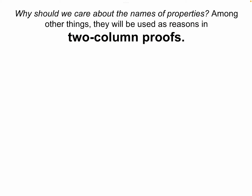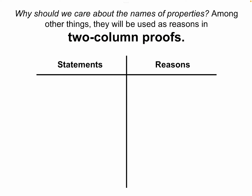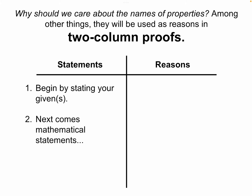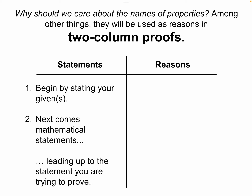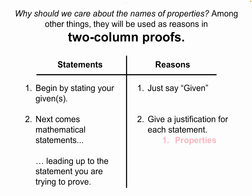Now, you also took notes on this page, so I'll go through it quickly. Why do we care about these properties? Because they give us reasons to prove things in geometry. They're going to be used in our two-column proofs. Our two-column proofs look like a T-chart with statements on one side and reasons on the other. You begin by stating your givens. Then you make mathematical statements that are logical in order, leading up to what you're trying to prove. Your first reason is always 'given.' After your givens, you give justifications — your properties, postulates, theorems, and definitions.